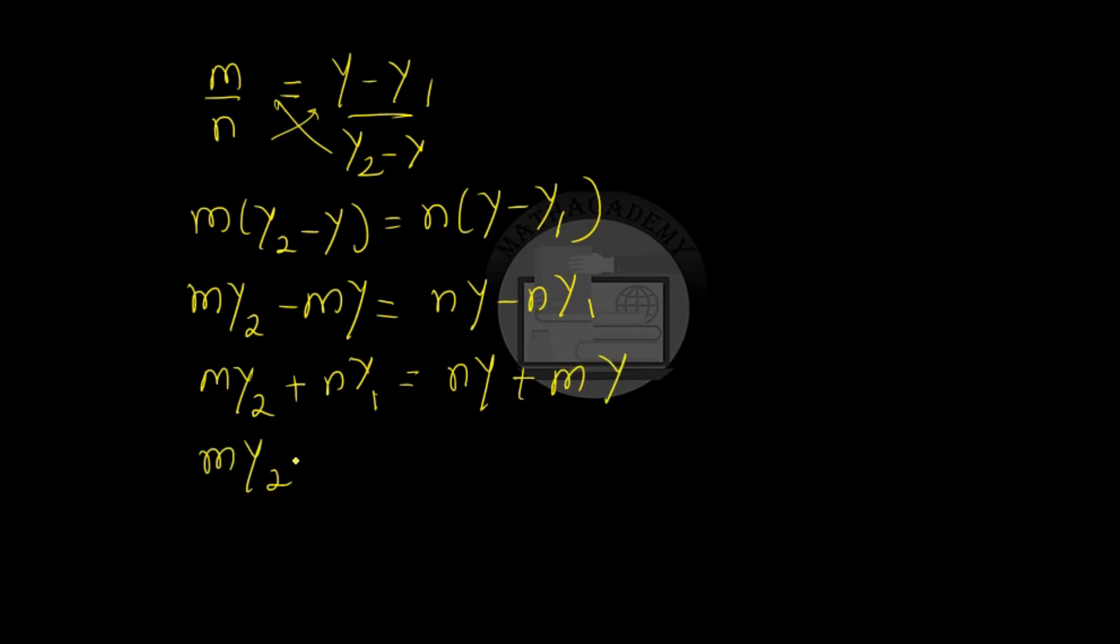my2 plus ny1 is equal to ny plus my. So my2 plus ny1 equals, take out y common and we are left with m plus n. So from here we get y is equal to my2 plus ny1 over m plus n.